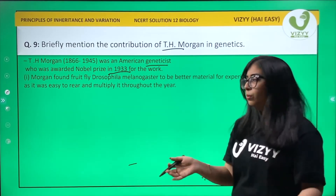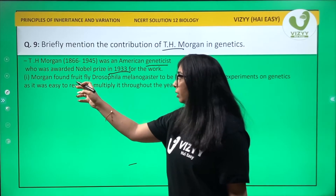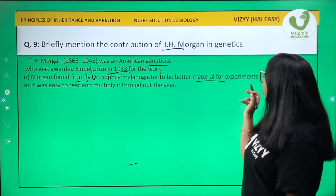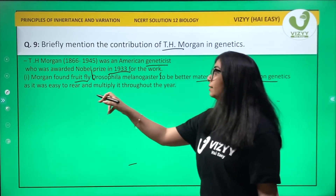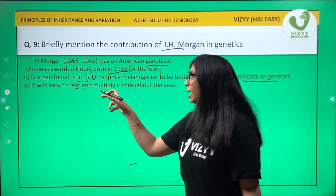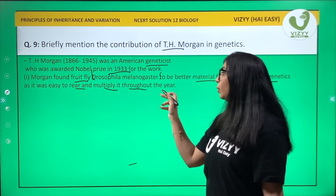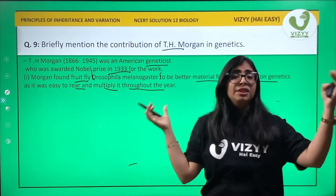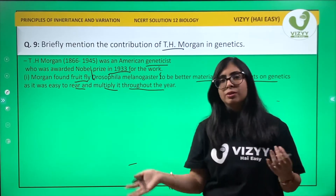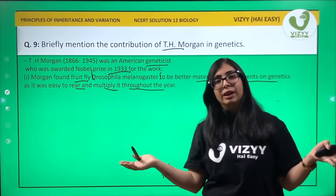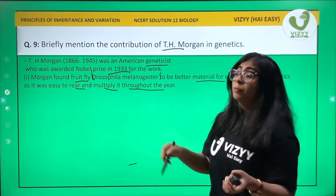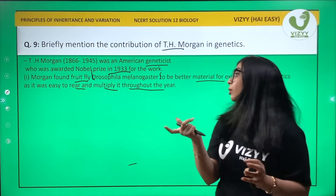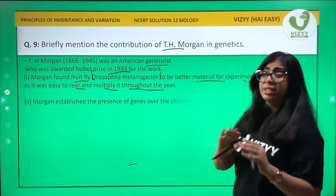First, he found out that the fruit fly Drosophila melanogaster is a better material for experiments on genetics, as it was easy to rear and multiply throughout the year. Instead of pea plants, he chose Drosophila because it has a very short lifespan and is easy to multiply.